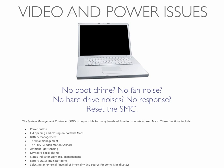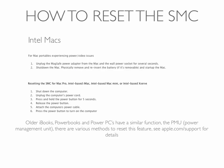To reset the SMC on your Intel Mac, for a Mac portable experiencing power and video issues, first unplug the MagSafe power adapter from the wall power socket for several seconds and shut down the Mac. Then remove and reinsert the battery if it's removable, and start up the Mac again.